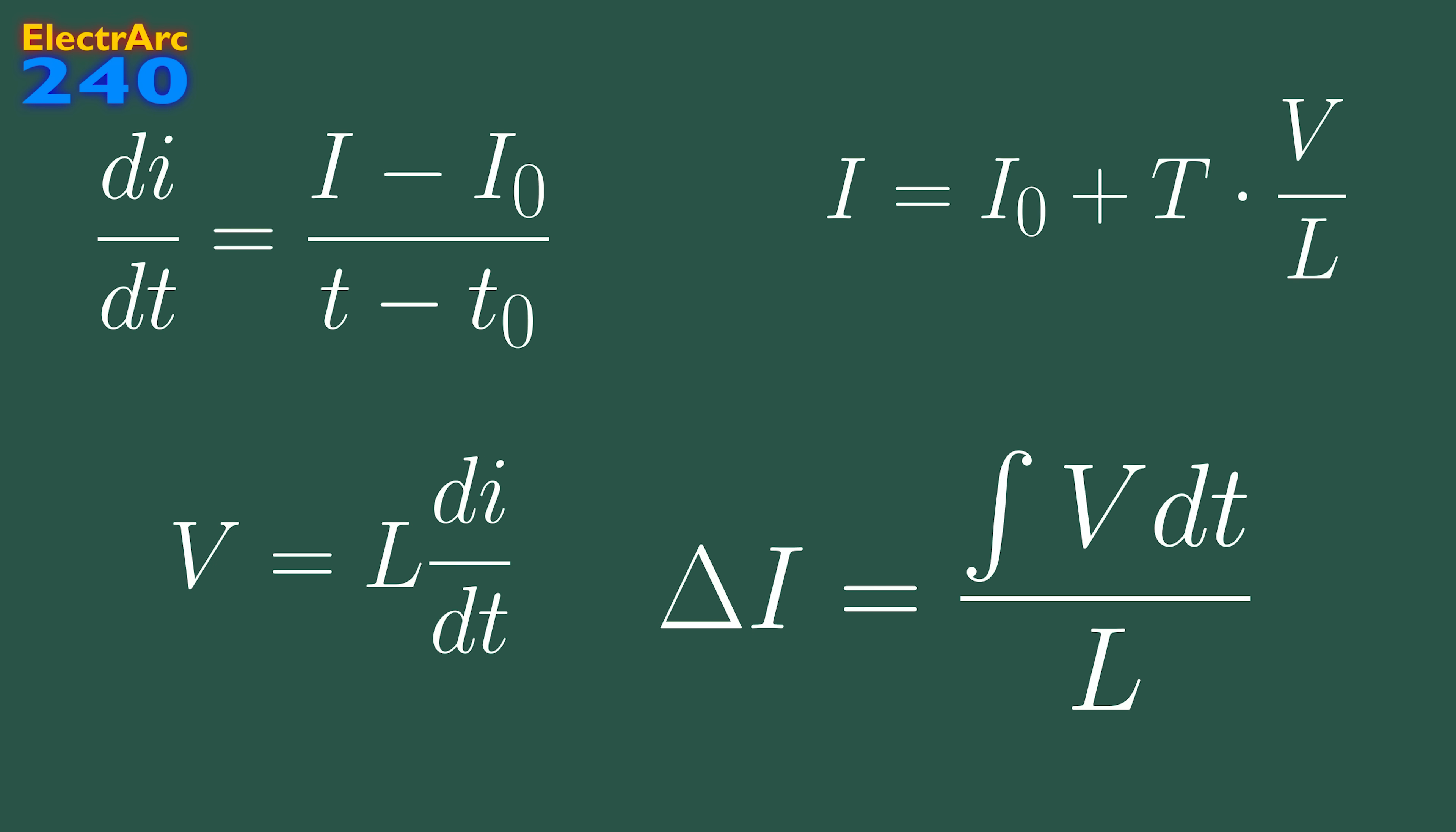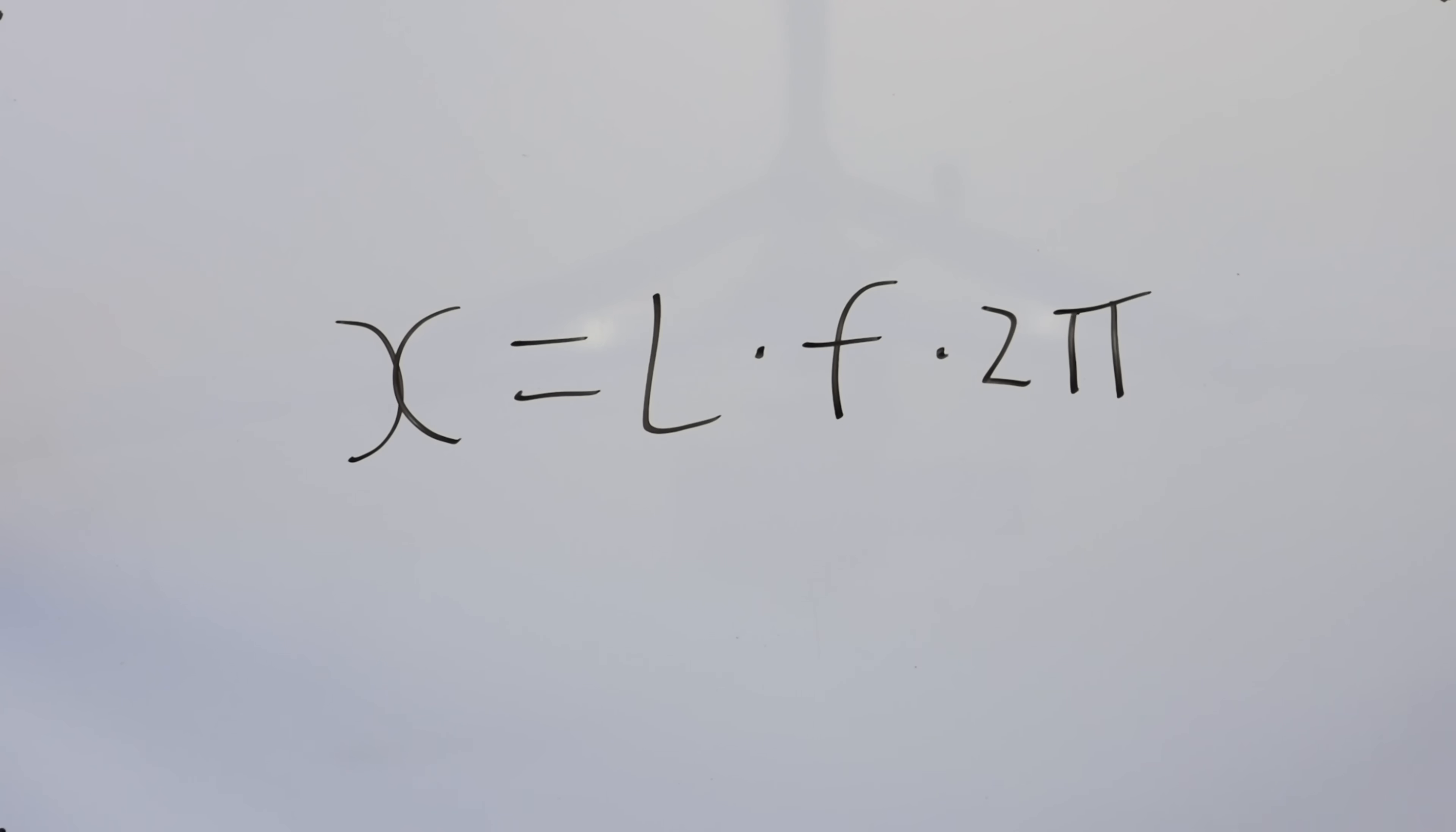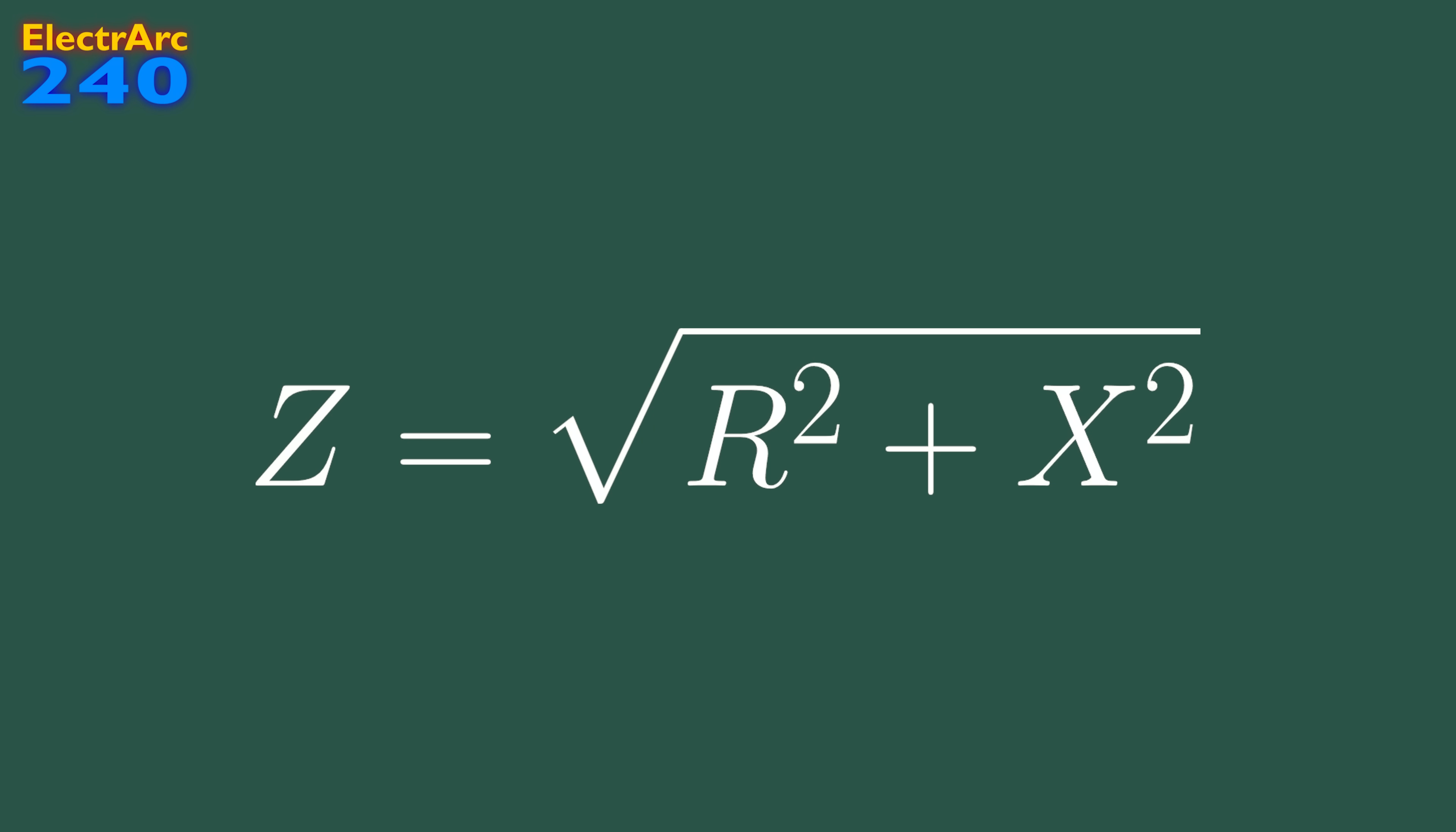Thankfully, all this confusing rate of change stuff can be wrapped up into a single quantity called reactance, which is like resistance, but tells us how much the current will be limited by the inductance at a given frequency. Reactance is simply the inductance multiplied by the frequency, and then multiplied by 2π, because circles. Ultimately, the current is determined by a combination of the resistance and the reactance, known as the impedance, which can be calculated using simple Pythagoras.